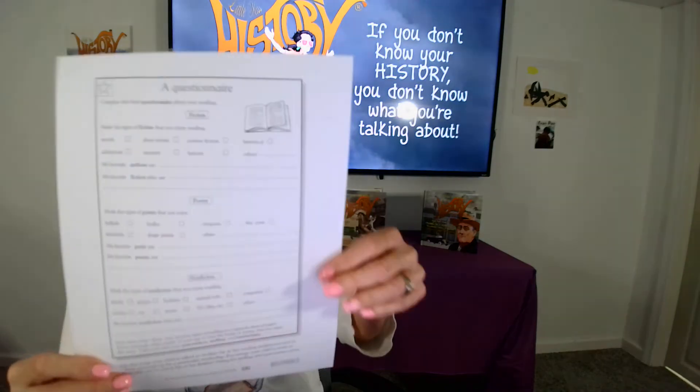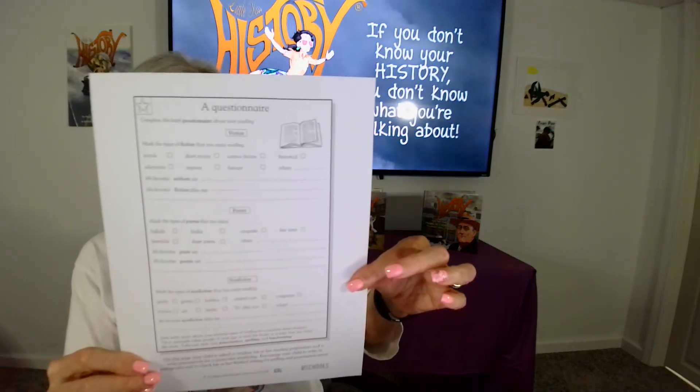Here is the template, and the template will be in the show notes — the link will be down at the bottom. As I said, there are some broad categories. Under Fiction, we have things like Historical Novels, Short Stories, and Science Fiction. Under the next group, Poetry, we have things like Ballads, Free Verse, Haiku, and Cinquain — different types of poetry. Ask the child to select a few.